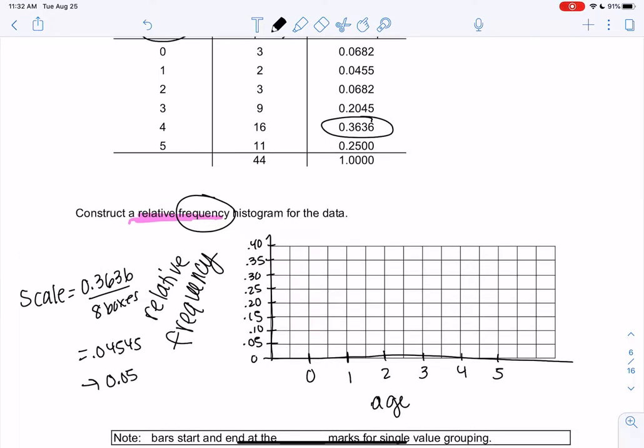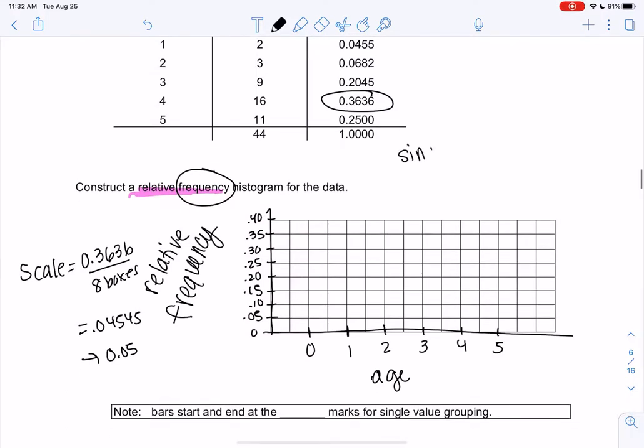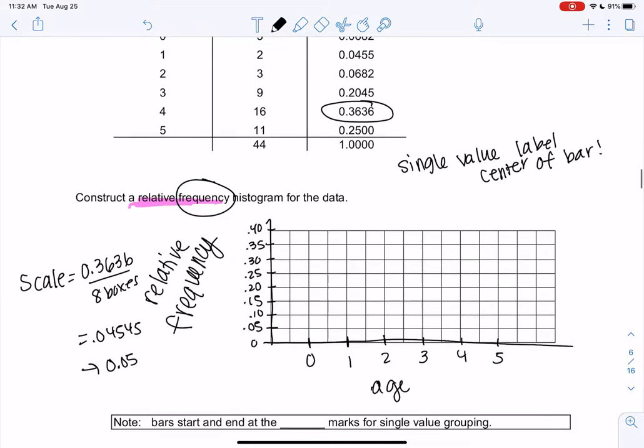So what I'm going to do on these ones is I'm actually going to label the center of the bar rather than the end points, because it's kind of weird to go zero to one because it's not really representing zero to one, it's only representing zero. So instead I'm going to put zero in the center.